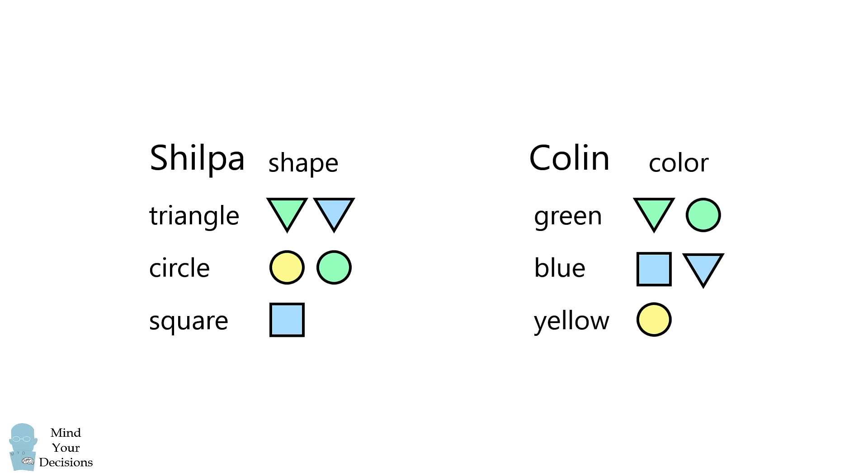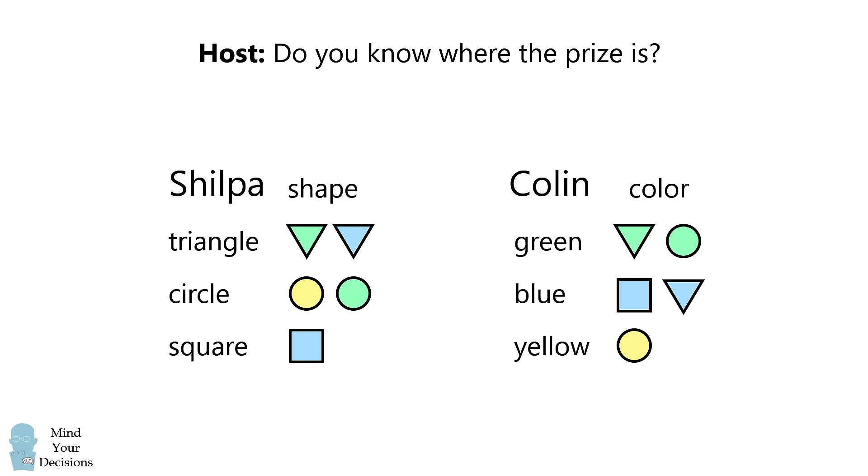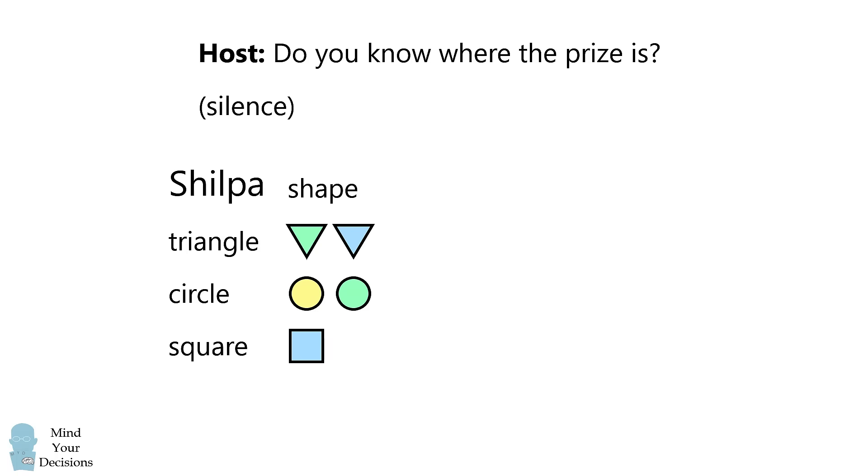So let's analyze the first question. The host asked, do you know where the prize is? Both Shilpa and Colin are silent. So what does that mean for each person? Let's analyze Shilpa. If Shilpa had been told square, she would have known the prize is under the blue square. She didn't know this, she was silent. So we can eliminate that Shilpa was initially told square.